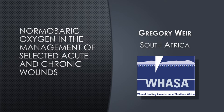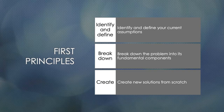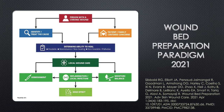A first principles approach to a daunting problem, as suggested by Elon Musk, includes the following: identify and define your current assumptions, break down the problem into its fundamental components, and create new solutions from scratch. A lot of the work has already been done by the giants who lead us in the field of wound care.